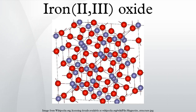Iron oxide is the chemical compound with formula Fe3O4. It occurs in nature as the mineral magnetite. It is one of a number of iron oxides, the others being iron oxide, which is rare, and iron oxide also known as hematite.